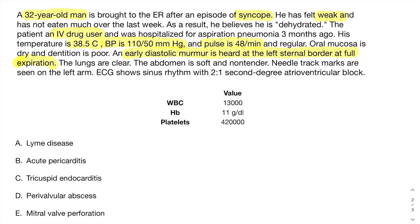The lungs are clear, the abdomen is soft and non-tender, and needle marks are seen in the left arm confirming he's an IV drug user. The ECG shows sinus rhythm with 2-to-1 second-degree AV block, meaning that after every other P wave a QRS complex is dropped.